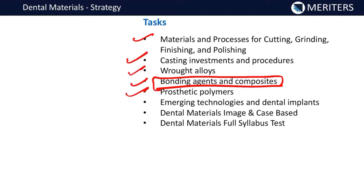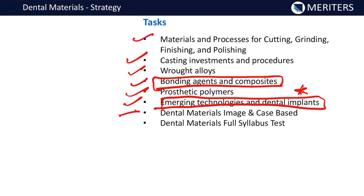Prosthetic polymers, emerging technologies, and dental implants are hot topics nowadays, so you should have a good command on these. We are also going to provide dental materials image-based and case-based questions. Last year in our GRP, we provided dental material images, and those were directly picked in the NEET 2021 examination from our question bank itself. So you should have a good approach for image-based and case-based dental materials questions. The last task is the dental materials full syllabus test.